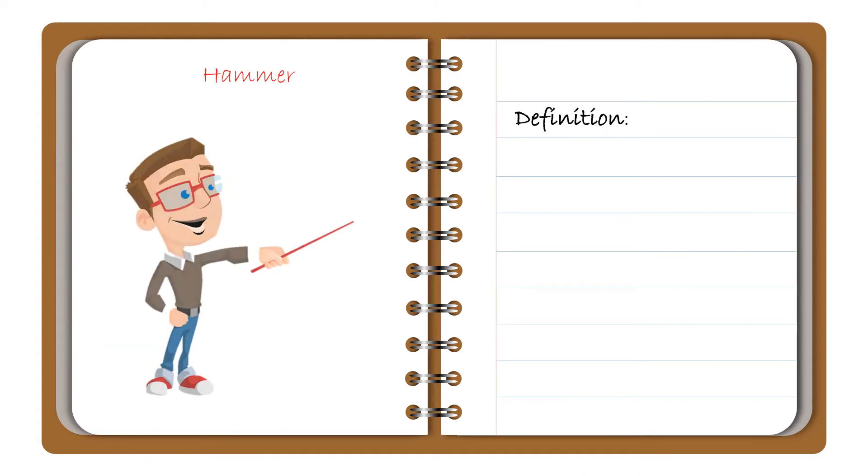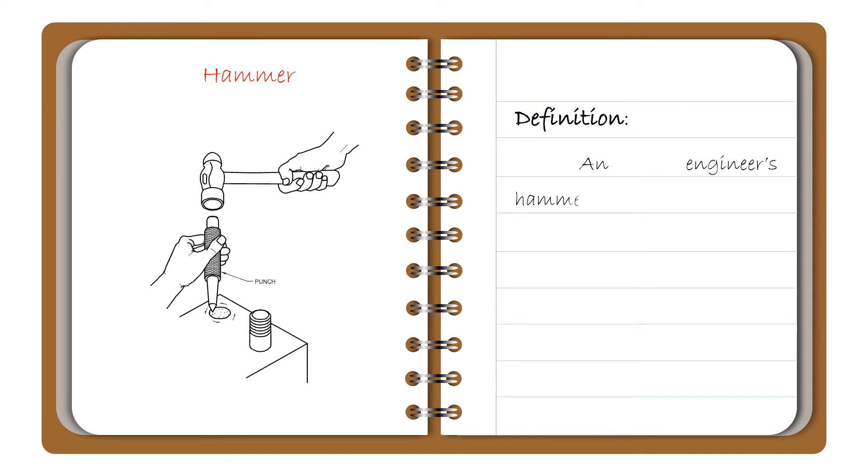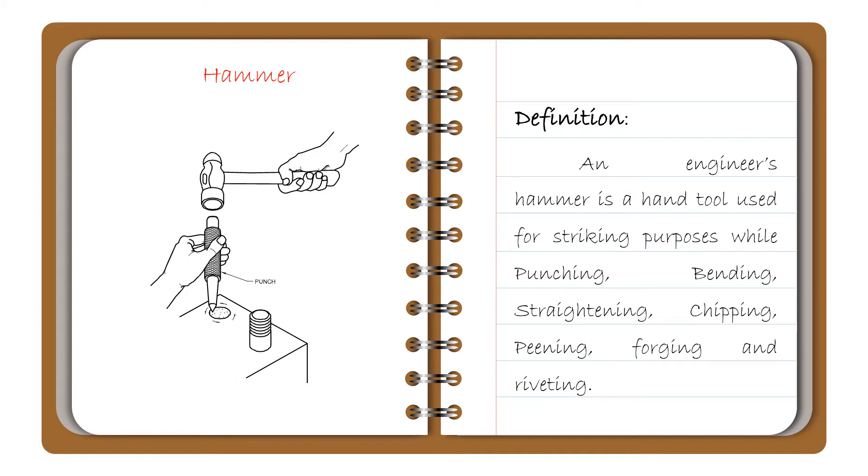Let's see the definition of the hammer. An engineer's hammer is a hand tool used for striking purposes while punching, bending, straightening, chipping, peening, forging, and riveting.